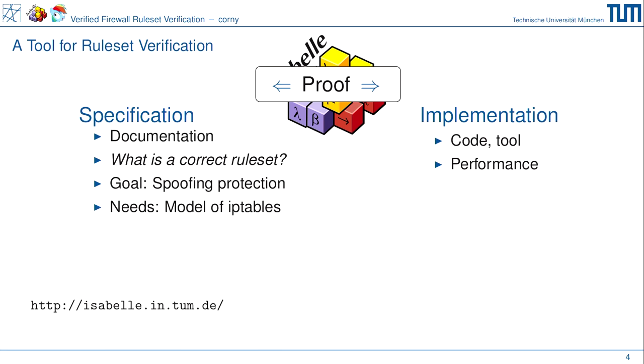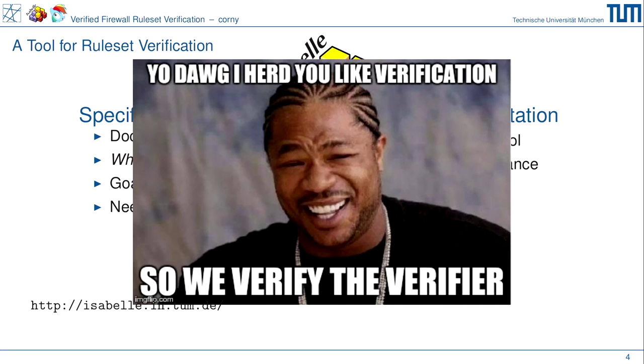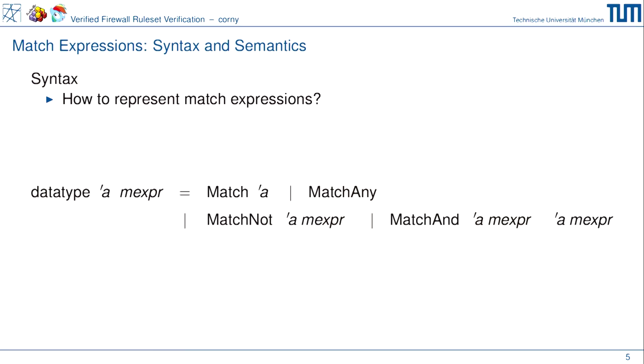Wir wollen beweisen, dass die Spezifikation wirklich was mit der Implementierung zu tun hat, damit wir am Ende beweisen können, dass der Code wirklich das tut, was er tun soll. Das Wichtigste ist, zuerst zu spezifizieren was es tun soll. Also: wir schreiben ein Überprüfungstool und überprüfen das Überprüfungstool selbst. Wir brauchen ein Modell für iptables, bevor wir überhaupt irgendetwas spezifizieren können — wir brauchen Ausdrücke für Bedingungen wie am Anfang gesehen.